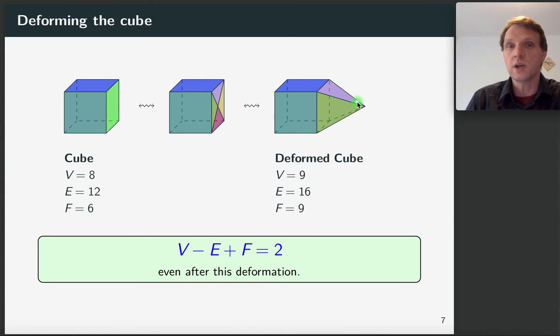And then we can move this vertex anywhere we like, so for example to here. And that deforms the cube into a new shape. How does that change the numbers though? So let's look at the number of vertices. Here we had eight vertices and we added another vertex in the middle, so now we are at nine.